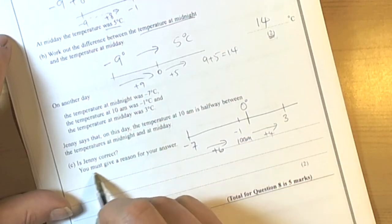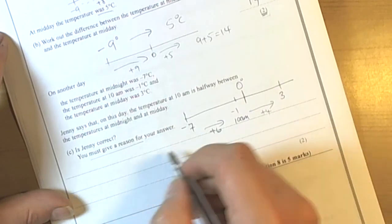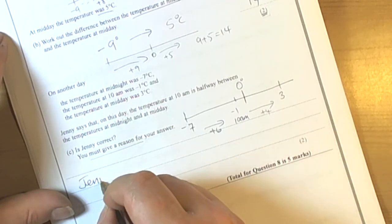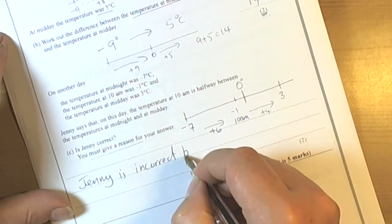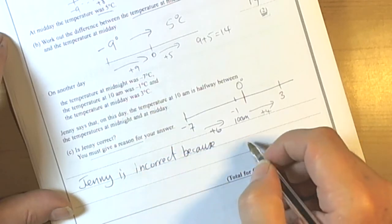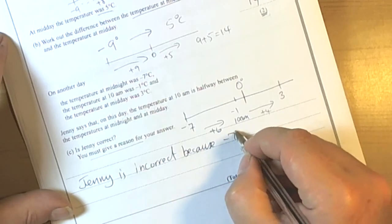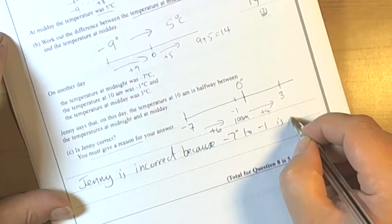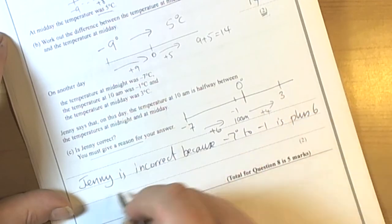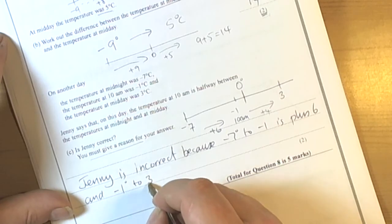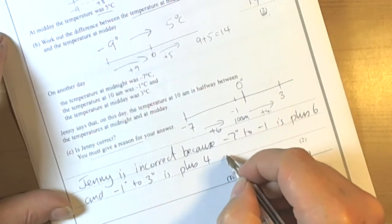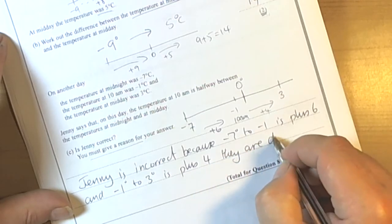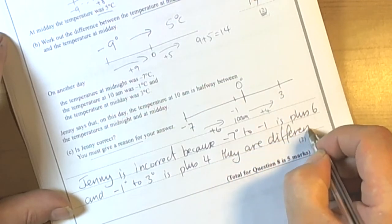So basically we'd have to, because it says give a reason, we would have to say Jenny is incorrect. Because minus 7 to minus 1 is plus 6. And minus 1 to 3 degrees is plus 4. They are different. That's one answer.